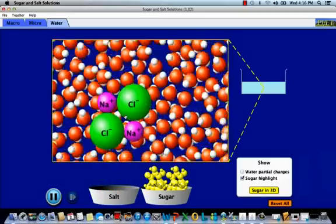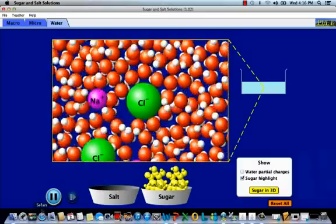If I add some sodium chloride and stop it quickly enough, I'll see that the negative chlorine tends to be surrounded by more of the positive hydrogen portions of the water molecule. And the positive sodium tends to be more surrounded by the negative oxygen. These forces are what pull the ionically bonded sodium chloride apart.